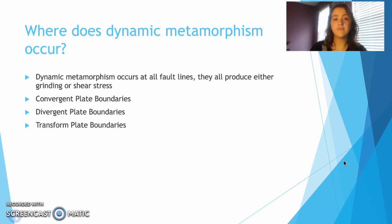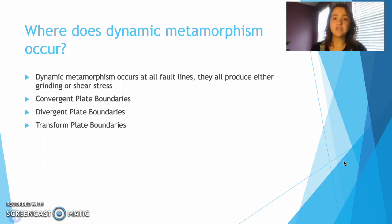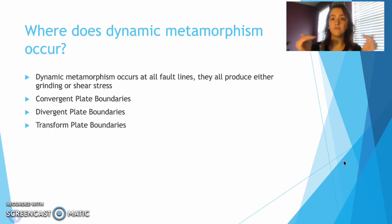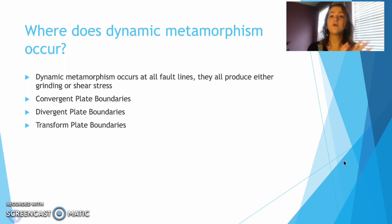Where does dynamic metamorphism occur? Dynamic metamorphism can occur at any fault line, any plate boundary. It can occur when plates are separating — convergent — or when plates are coming towards each other — divergent. Even in subduction zones it can happen, and it can also occur when plates are rubbing against each other, or transforming plate boundaries.